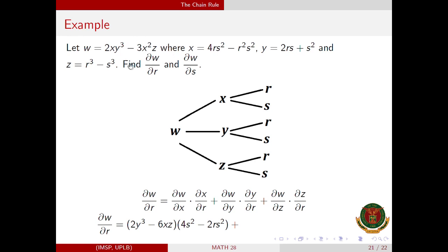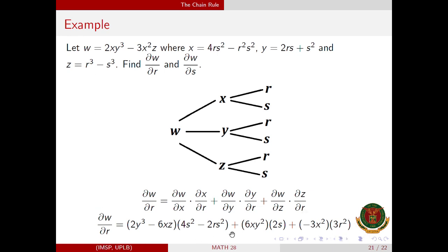The partial derivative of w with respect to y: 3x squared z is a constant so that term is 0, and from 2xy cubed we get 6xy squared. The partial derivative of y with respect to r: s squared is constant giving 0, and the derivative of 2rs with respect to r is 2s. The partial derivative of w with respect to z is negative 3x squared. The partial derivative of z with respect to r: s cubed is constant giving 0, so we get 3r squared. This is the partial derivative of w with respect to r.